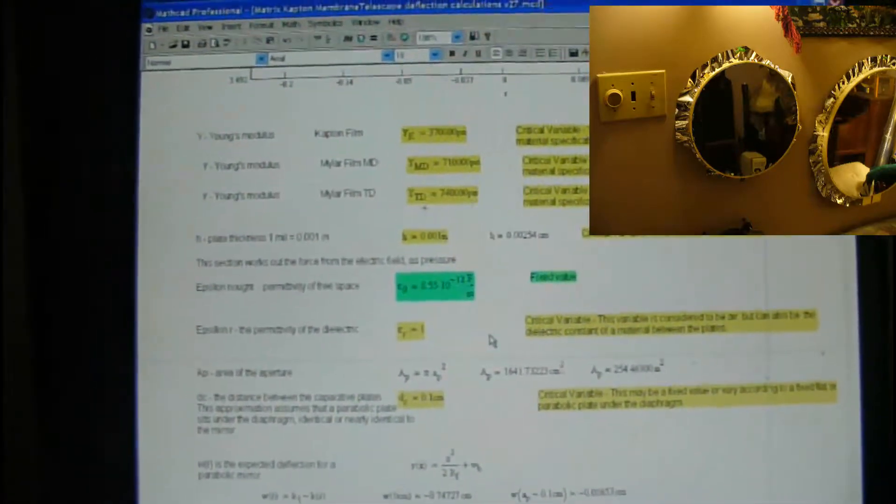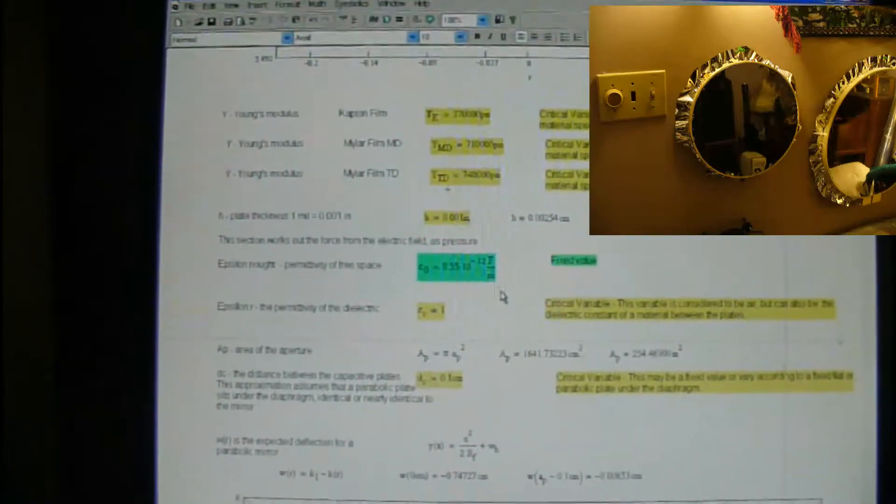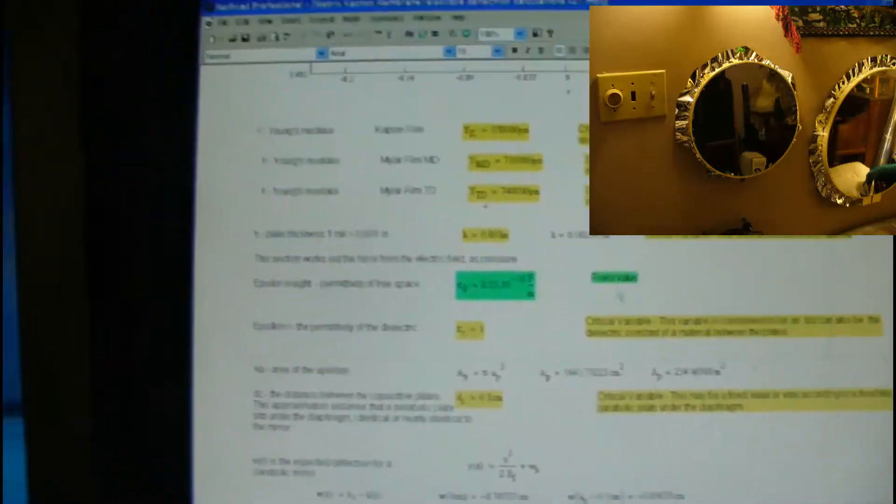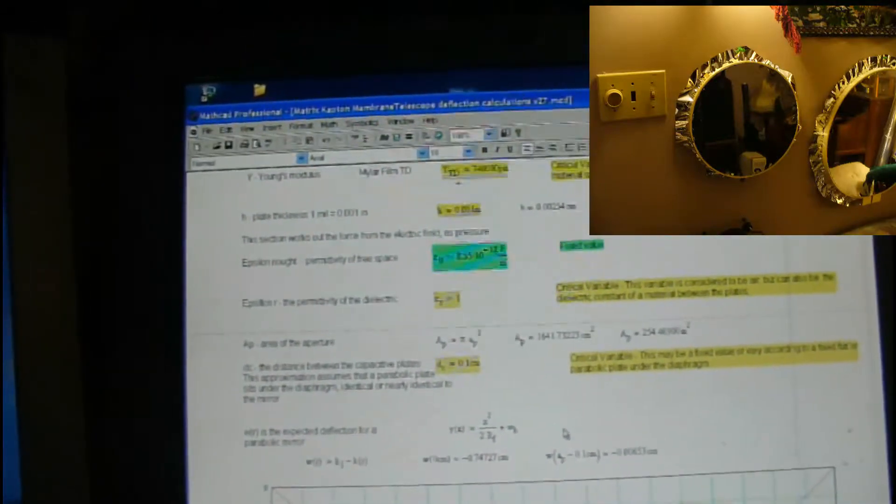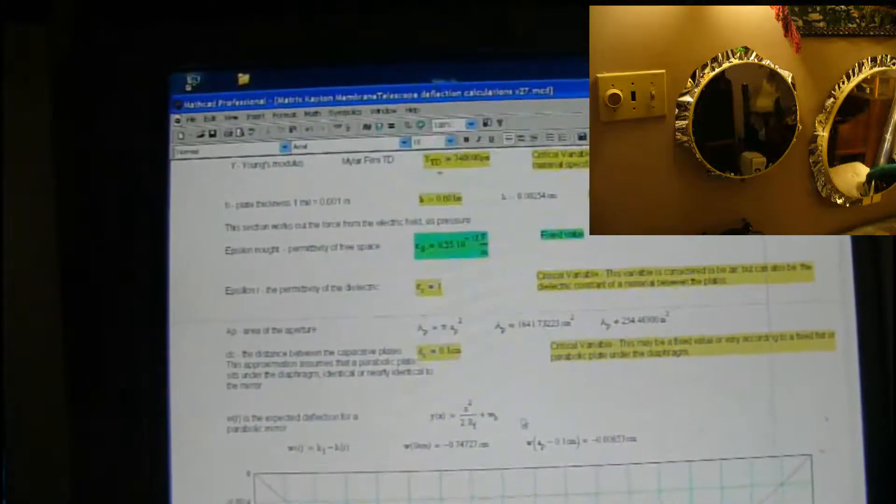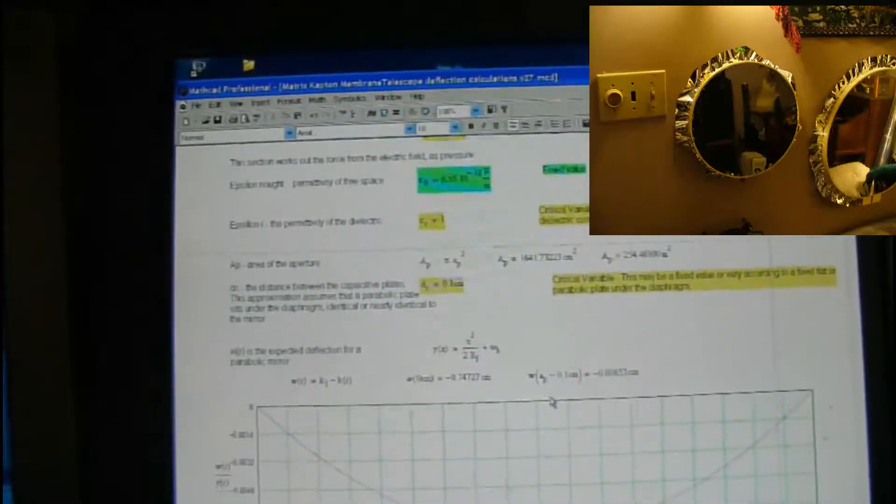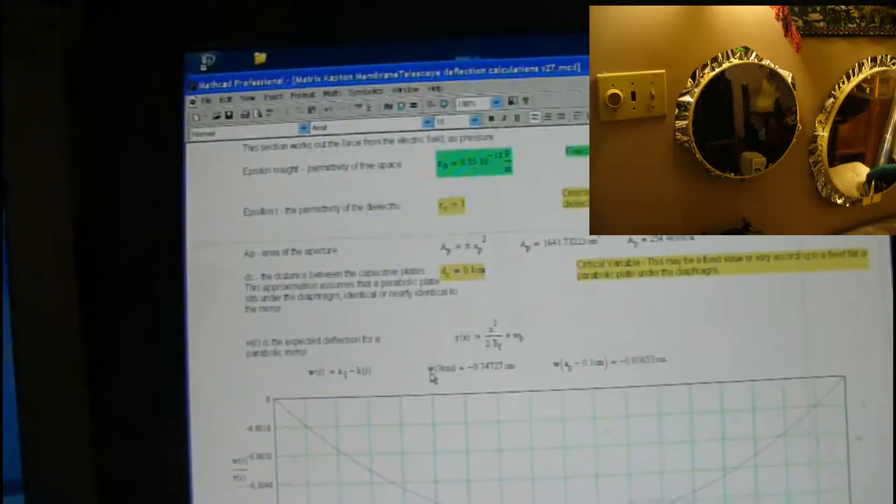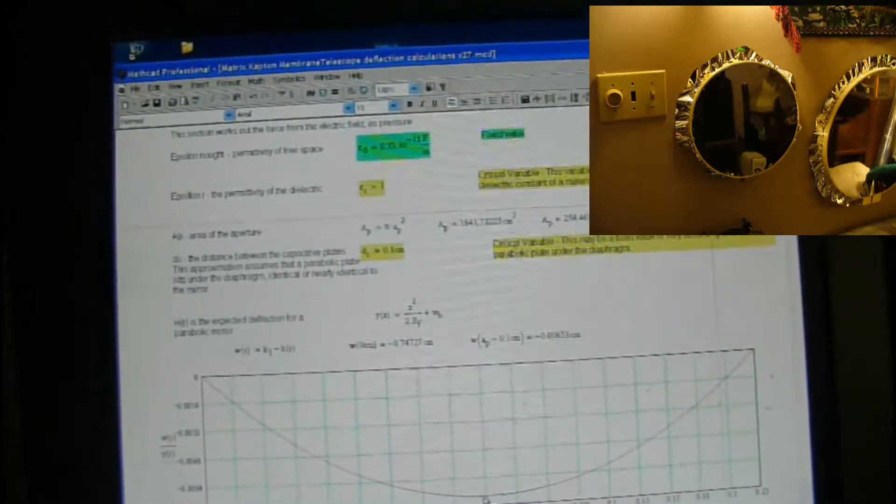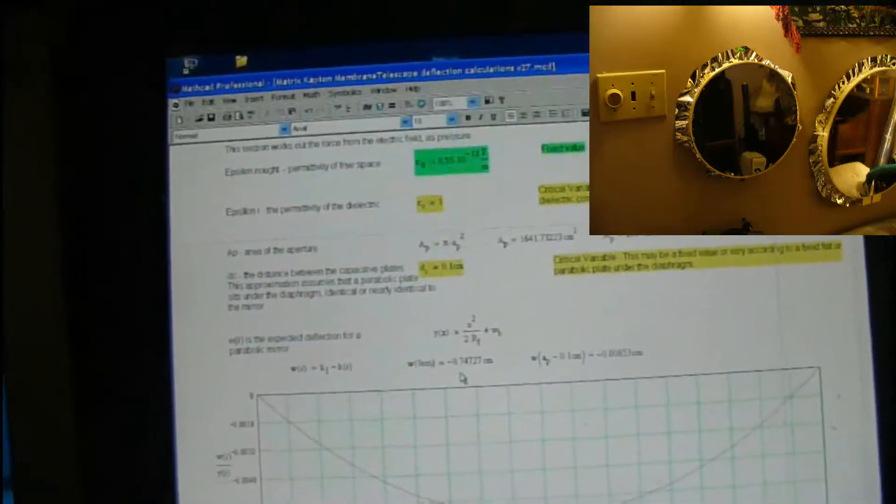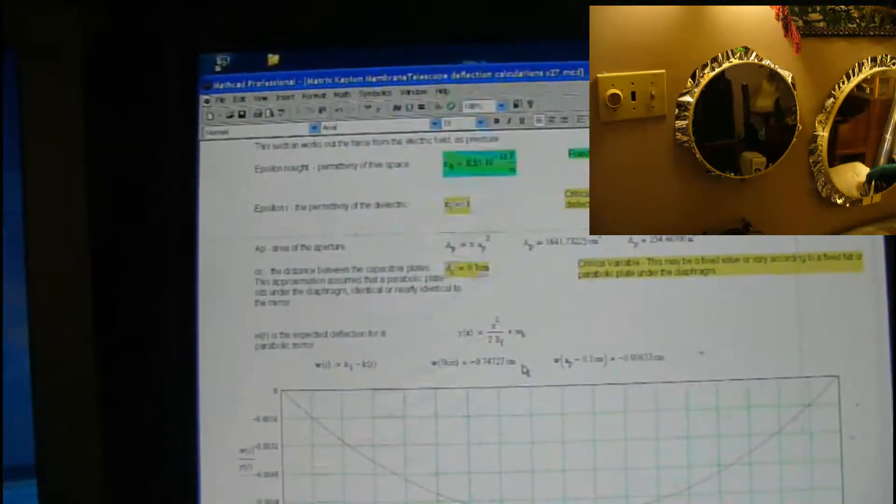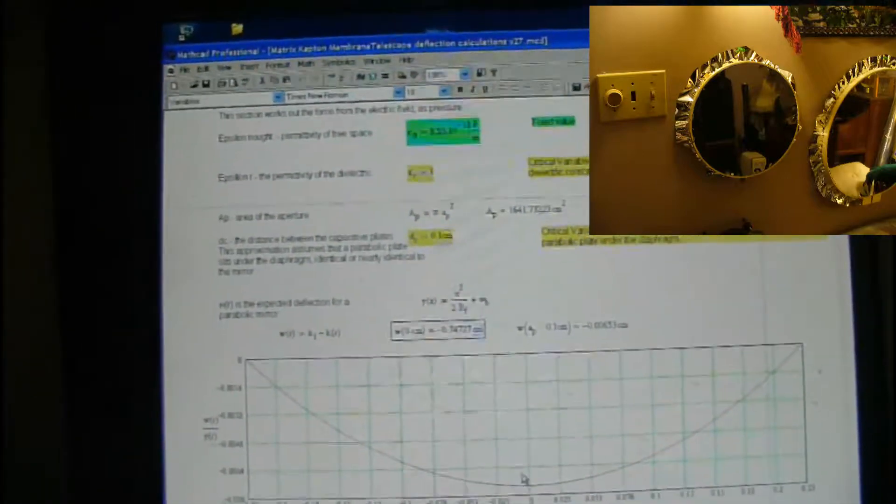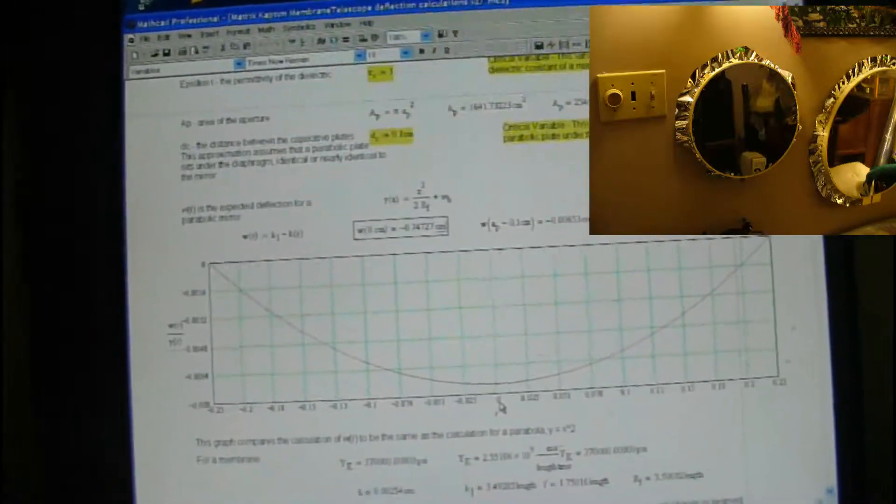Let's see. Epsilon R permittivity of the dielectric. Epsilon Nought is, of course, dielectric is free space. It's going to be air. Epsilon Nought is permittivity of free space. These are some of the things that we need in the calculation. Expected deflection for a parabolic mirror is going to be X squared over 2R sub S, W sub B. And what that says is, this deflection is what's called W at 0 centimeters. That's at the center of the mirror. It's going to be minus 0.74727 centimeters. And we can figure that out in inches, but if I change the units here, it'll change it to inches. But it's like around three-tenths of an inch, roughed out.